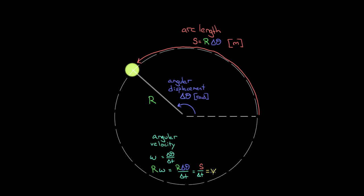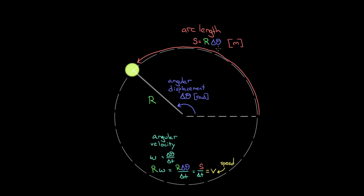I'll write the speed as v, though note this is not velocity — it's not a vector. The arc length is distance, not displacement, so distance per time is speed, not velocity. Since we're choosing to use arc length (distance), we relate angular velocity to speed: v = r·omega.